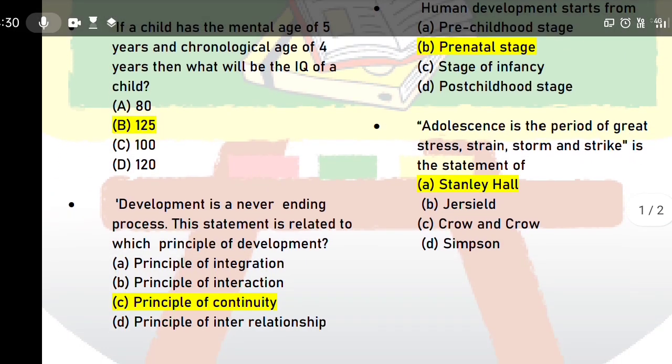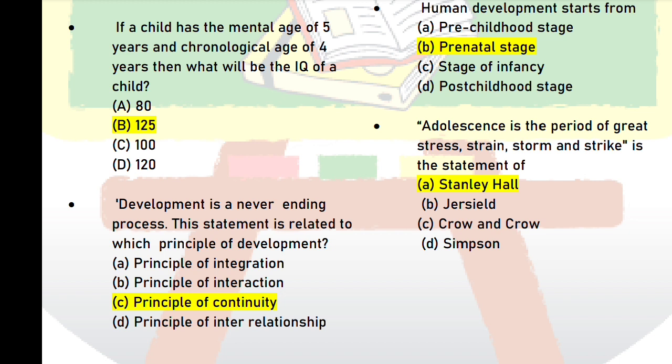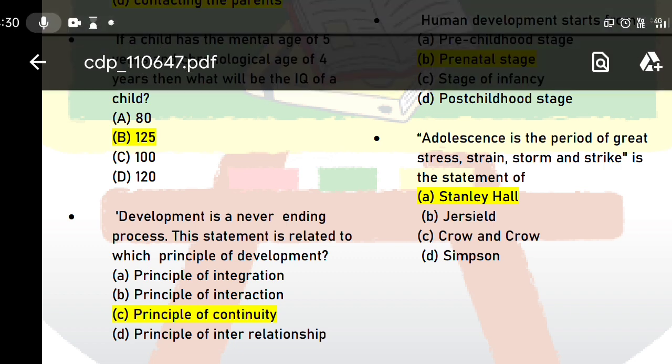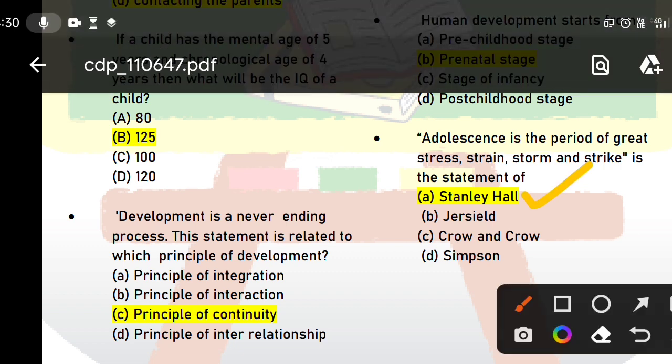Next question: 'Adolescence is the period of great stress, strain, storm and strike' — this statement was given by whom? Adolescence, or teenage, is characterized by stress, strain, storm, and strike. The stage of thunder and storm in adolescence was described by Stanley Hall. This is a very important name to remember.